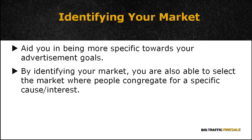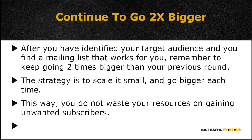As a result, you're able to effectively generate the kind of traffic you want. By identifying your market, you're also able to select where people congregate for a specific cause or interest. After you've identified your target audience and found a mailing list that works for you, remember to keep going two times bigger than your previous round. For instance, if you purchase 50 subscribers on a list and it works, continue with 100 subscribers for the next round, and continue doing the same each round until you've accumulated your ideal list.